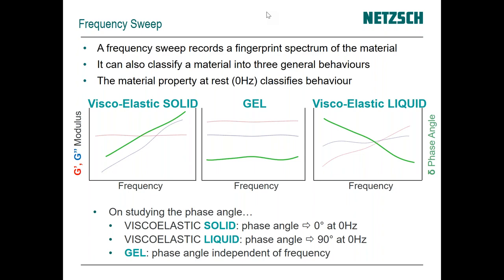From that fingerprint we can quickly identify basic characteristics of the material. If G' is larger than G'' the material is more viscoelastic solid. If the material has no change in its properties it falls into the category of gel, and depending on the differences it could also be considered a solid. If the material is more viscous than elastic then it would be a viscoelastic liquid. The key is that states change depending on the time element — the frequency — associated with the measurement.